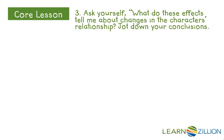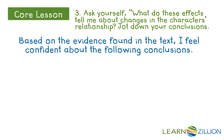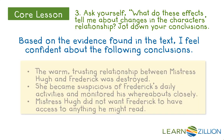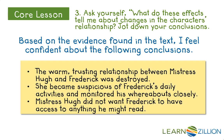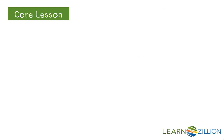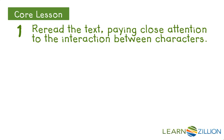Now we need to ask ourselves what did these effects tell us about changes in the characters' relationship — step three. We jot down conclusions based on the evidence found in the text. First, the warm trusting relationship that had existed between Mistress Hugh and Frederick was destroyed. She became suspicious of Frederick's daily activities and monitored his whereabouts very closely. We can also conclude that Mistress Hugh did not want Frederick to have access to anything he might read.